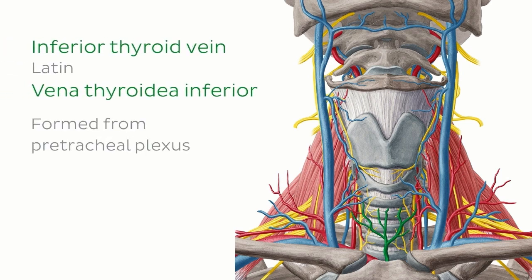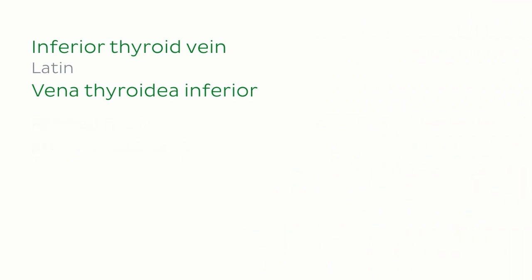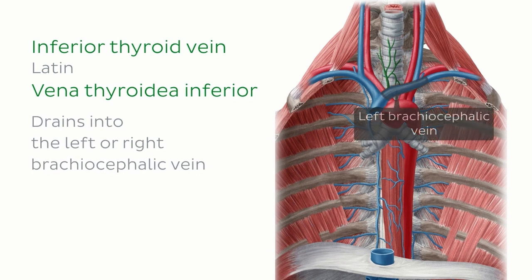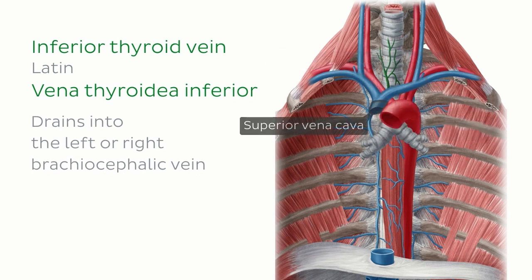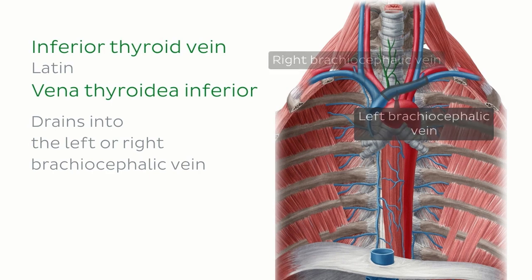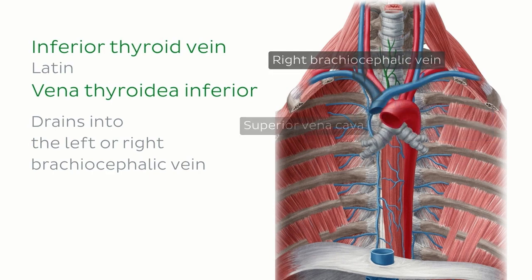In this image, we can see the plexus draining into one common inferior thyroid vein, which can sometimes happen. This single inferior thyroid vein will either drain into the left or right brachiocephalic vein or occasionally directly into the superior vena cava. When the inferior thyroid veins do not form a single trunk, the left drains into the left brachiocephalic vein and the right usually drains into the right brachiocephalic vein or sometimes into the superior vena cava.